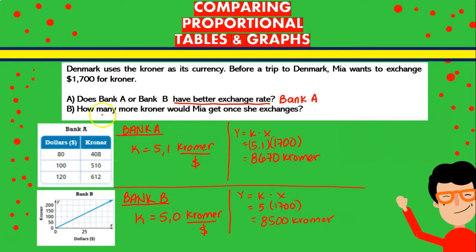And the question was, how many more kroner would Mia get once she exchanges in the bank she gets a difference of 170 kroner more on Bank A. So that means that she gets 170 kroner.